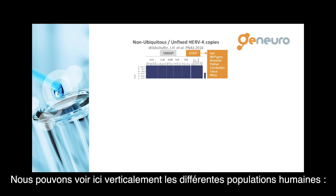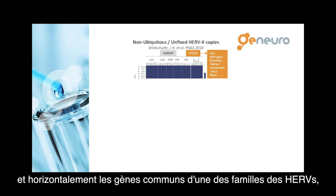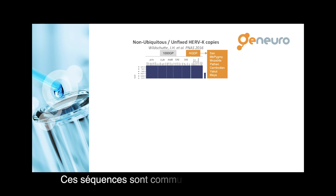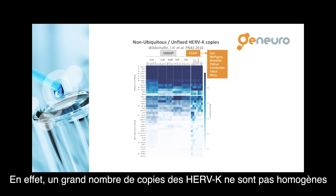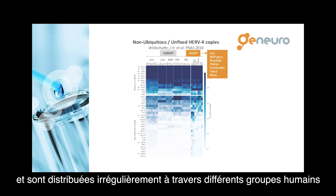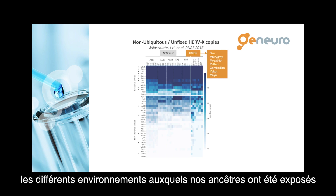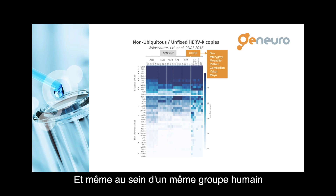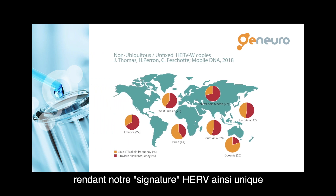Here we can see vertically different human populations — African, European, etc. — and horizontally common genes from one of these HERV families, in this case HERV K. These sequences are common to all mankind, but not all HERVs are common to all of us. In fact, a great number of HERV K copies are non-ubiquitous and unevenly distributed between different human groups, probably reflecting the different environments to which our different ancestors were confronted. And even within the same human group, there are many interpersonal variabilities, making our HERV signature unique.